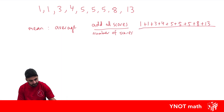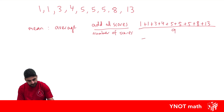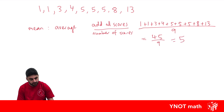Let's count them up. There's 1, 2, 3, 4, 5, 6, 7, 8, 9 scores. So divide it all by 9. Adding all the top gives us 45 divided by 9, which is just 5. So the average of all those scores is 5 — another name for the average is the mean.